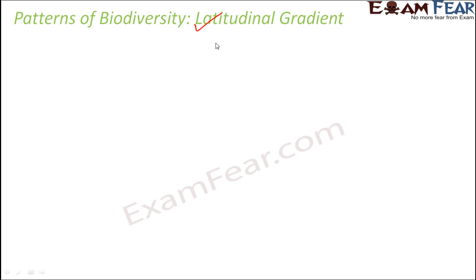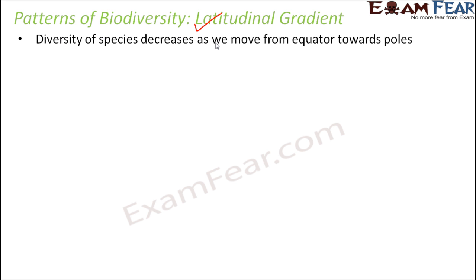The first concept we will talk about is latitudinal gradient. Before I discuss that, I want to check if you know what latitude and longitude are — something you would have studied in geography in junior classes. This concept says that the diversity of species decreases as we move from the equator towards the poles.